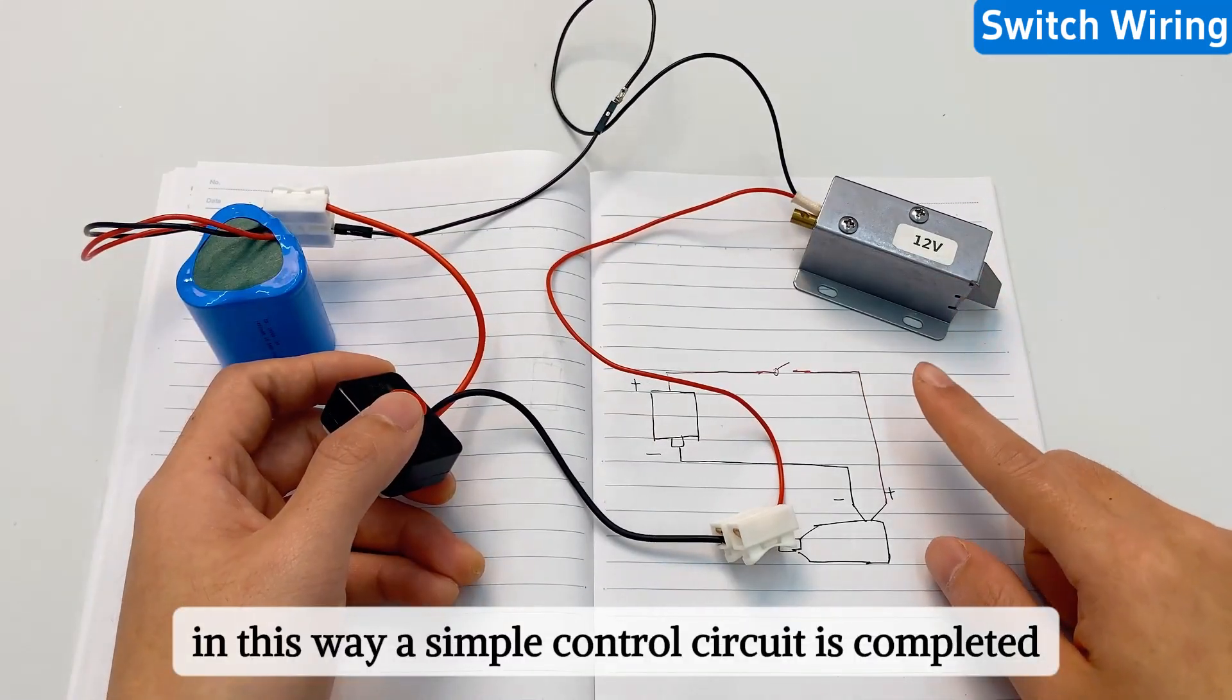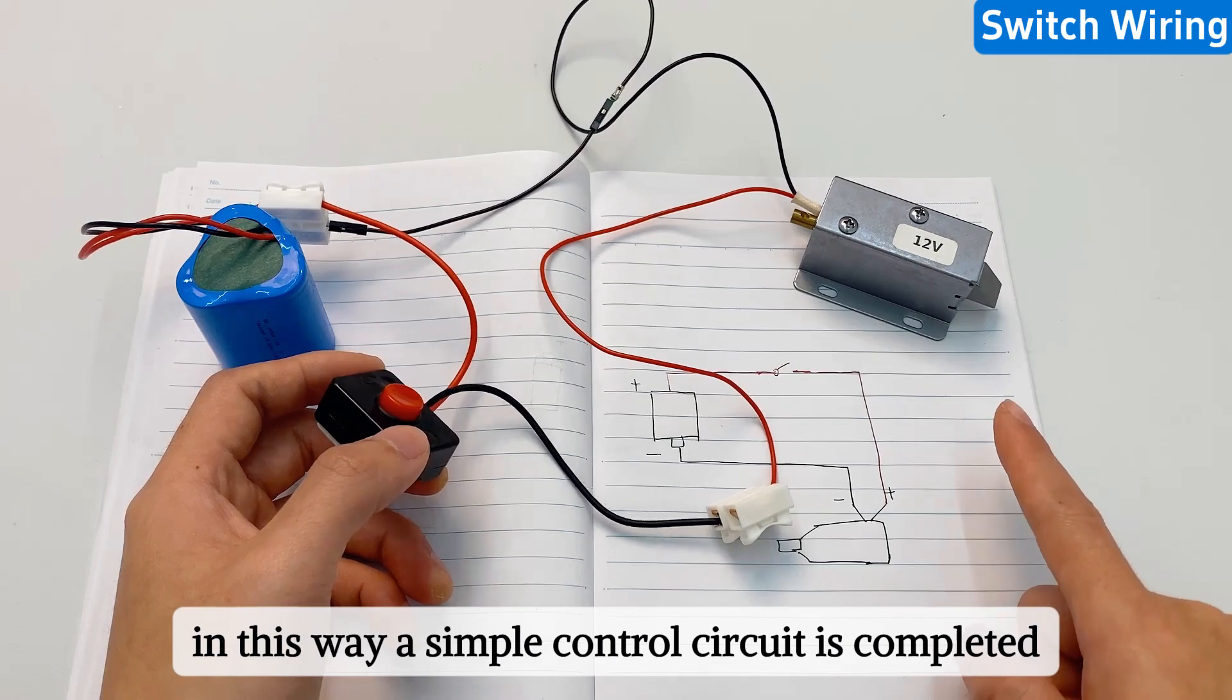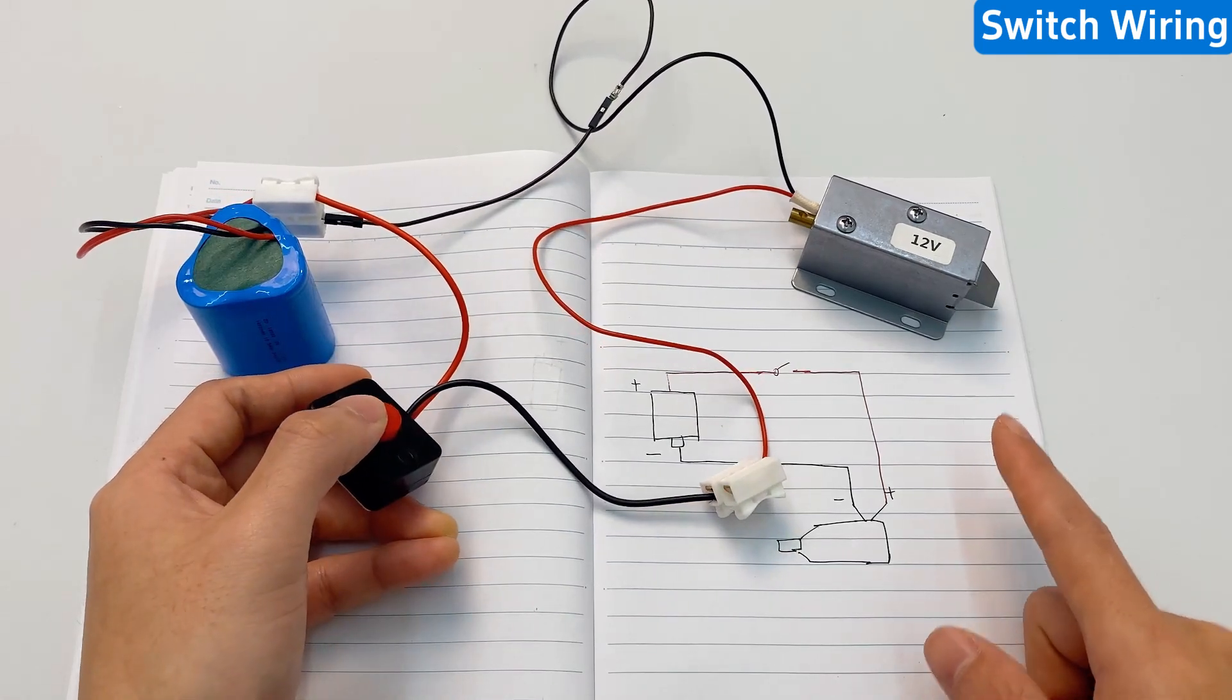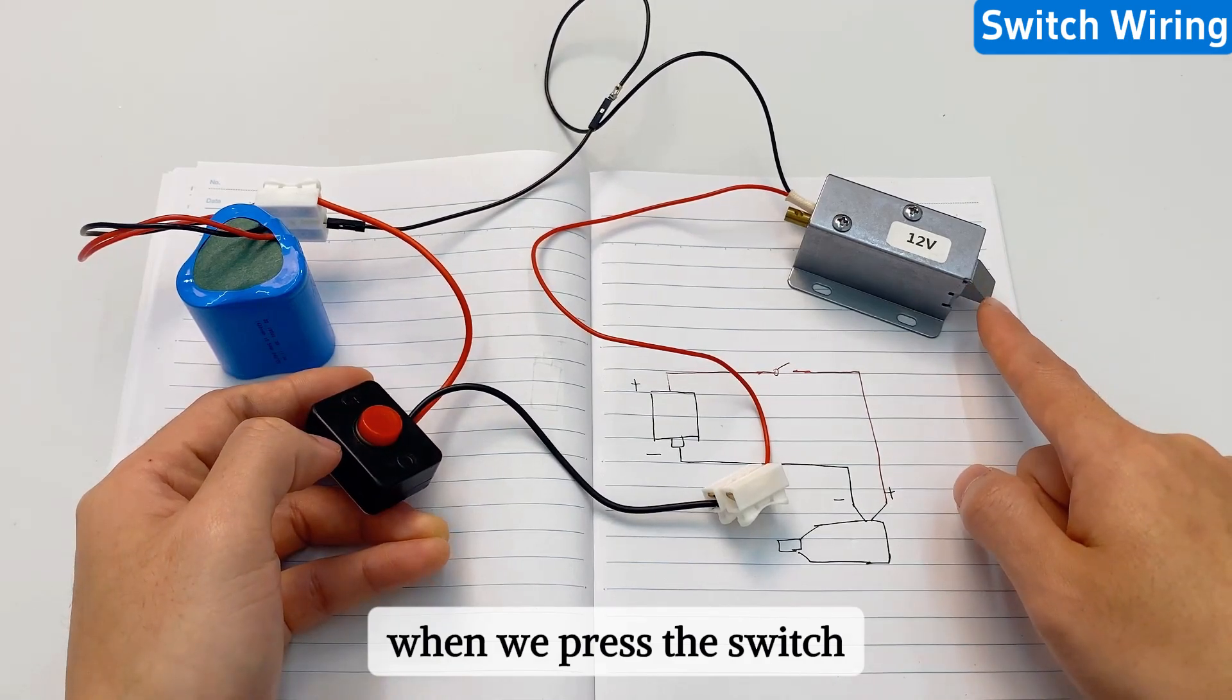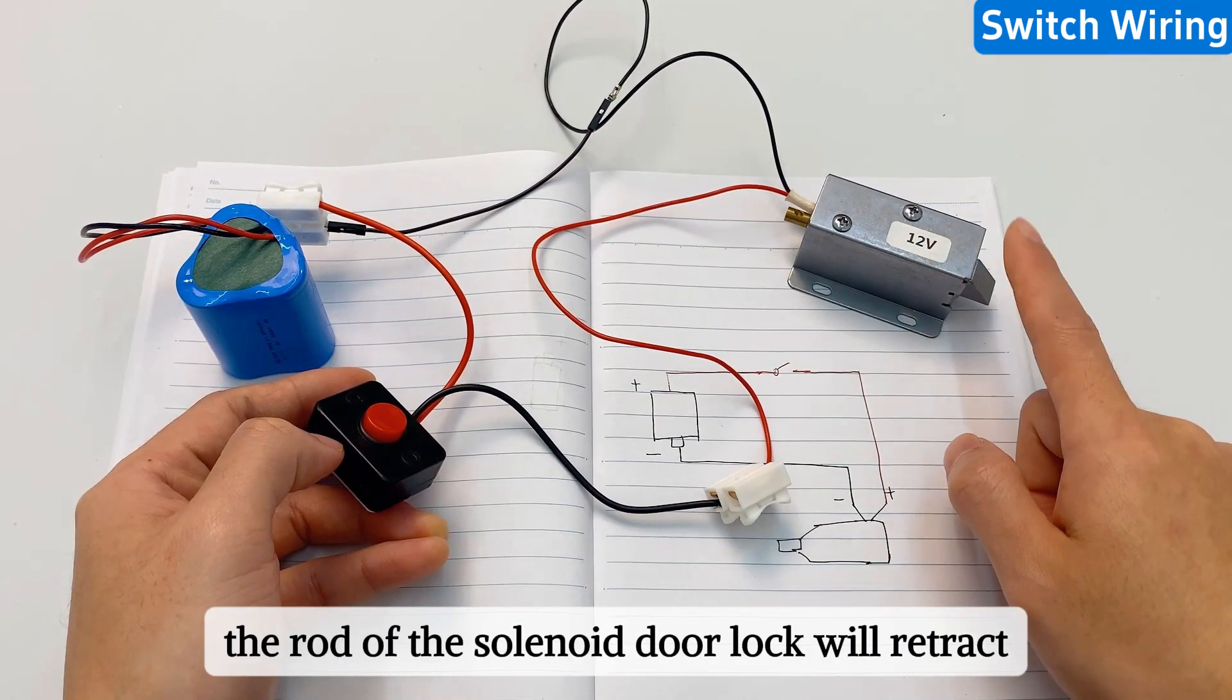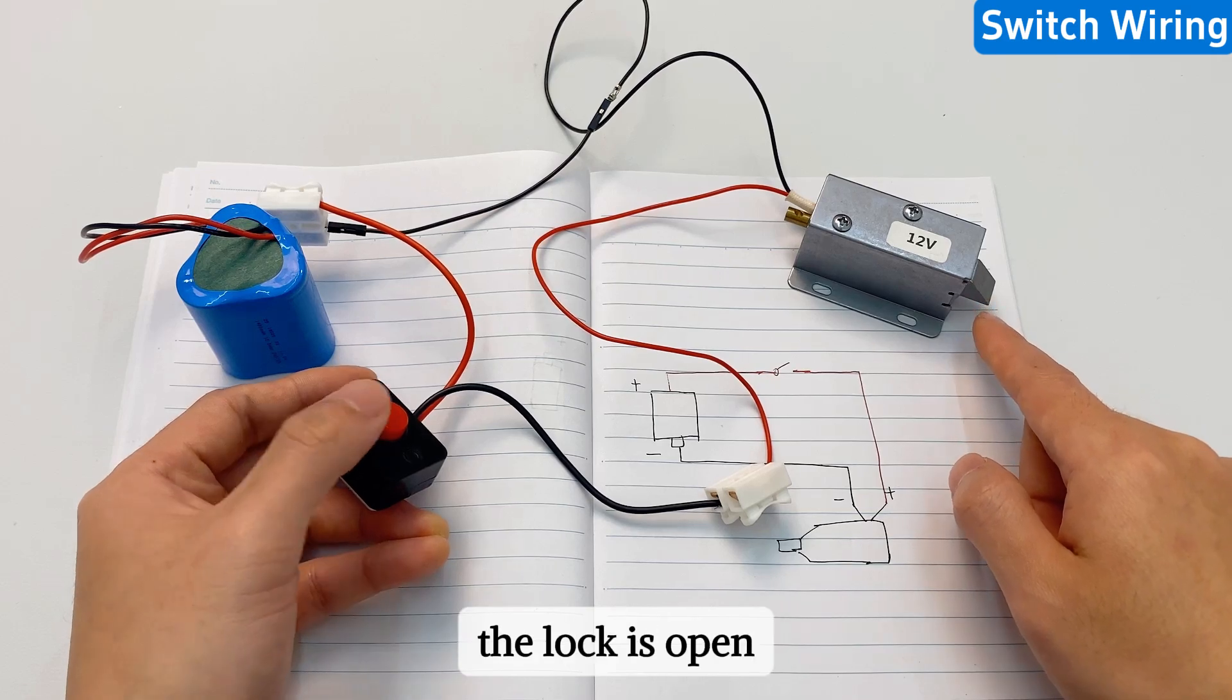In this way, a simple control circuit is completed. When we press the switch, the rod of the solenoid door lock will retract. The lock is open.